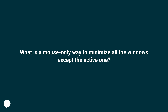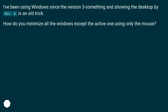What is a mouse-only way to minimize all the windows except the active one? I've been using Windows since version 3 something, and showing the desktop by other means is an old trick. How do you minimize all the windows except the active one using only the mouse?